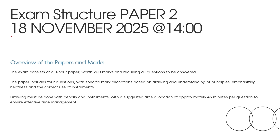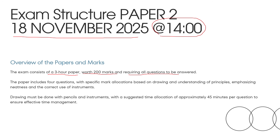You are writing paper 2 on the 18th of November at 2 o'clock midday, so please make sure that you are on time. The exam consists of a 3-hour paper with 200 marks and requires all questions to be answered. The paper includes 4 questions with specific mark allocations, emphasizing neatness and the correct use of instruments. Drawings must be done with pencils and instruments, with a suggested time allocation of approximately 45 minutes per question to ensure effective time management.